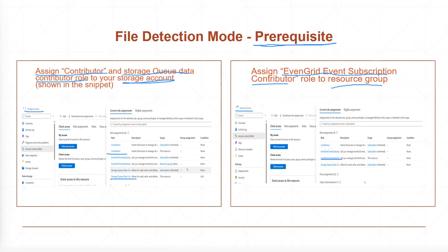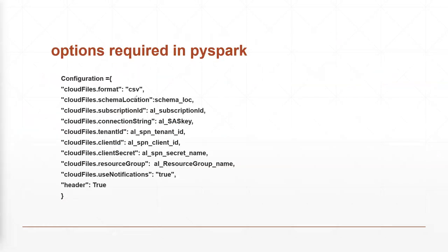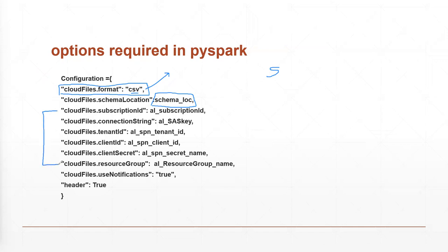Once those roles are assigned, the next part is to create your configurations to use the file notification mode. There are a few things that are required. Generally you pass the format of the files you are going to read — CSV, JSON, Parquet, or whatever format you're using. Then you specify the schema location, which is where auto loader will save information related to the schema. You also need to pass: subscription ID, SAS ID, tenant ID, client ID, client secret, and resource group name.